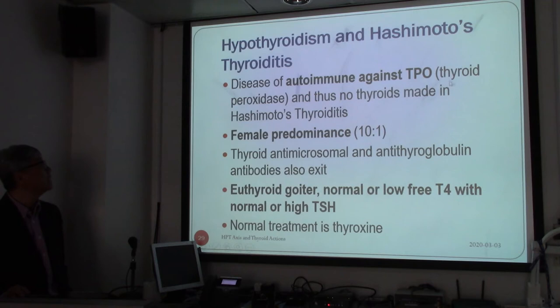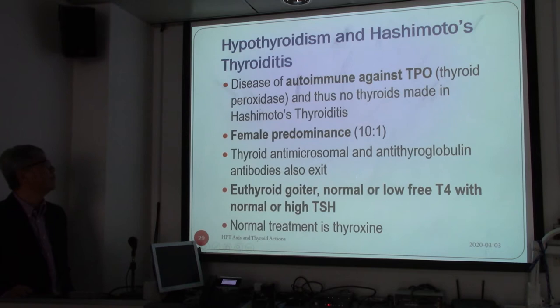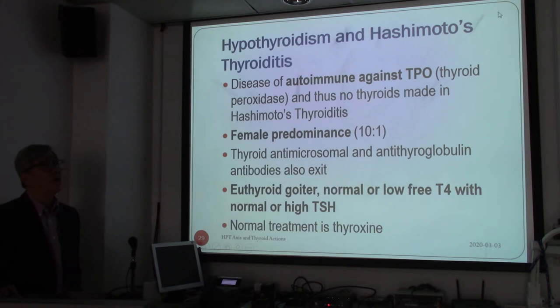Hashimoto's thyroiditis is autoimmune against the peroxidase, as mentioned before, so no thyroid hormone is made in these patients. Interestingly, more cases are found 10 to 1 from female to male — so 10 female to 1 male. The majority are female patients, and in fact many other hypothyroidisms are also found in females, as the number of cases with thyroid diseases are usually women.